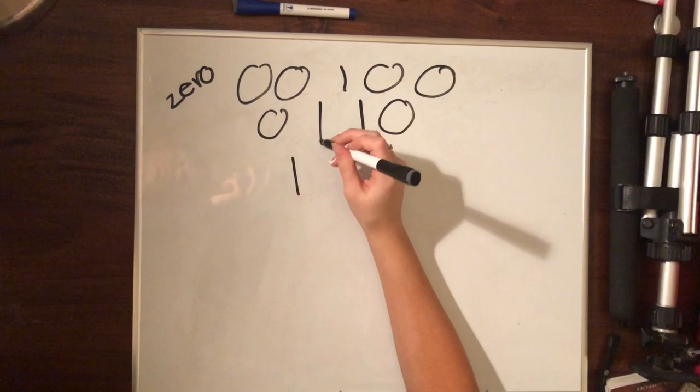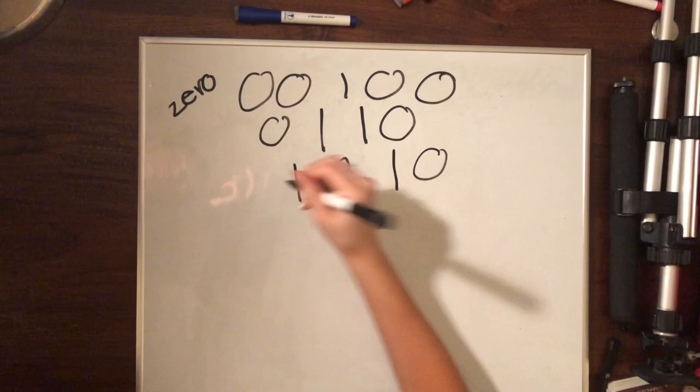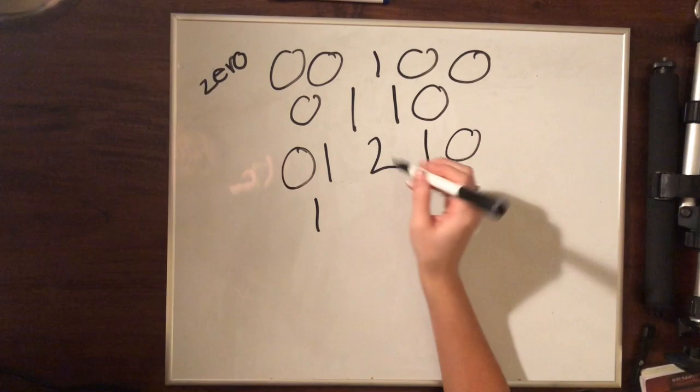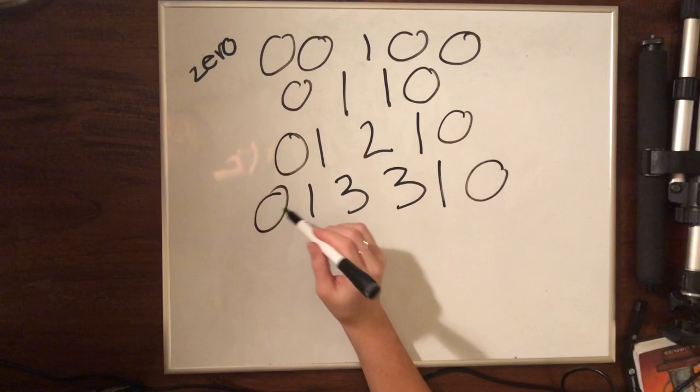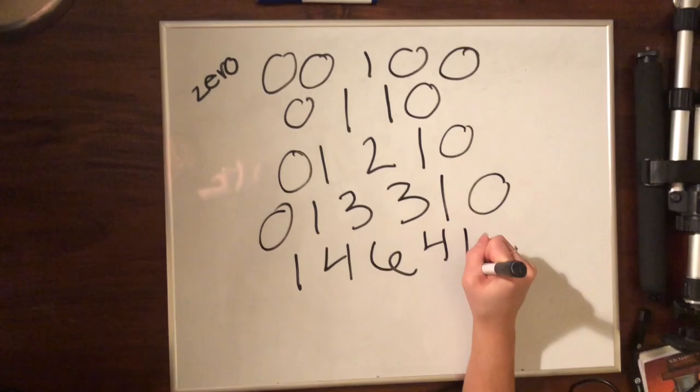We have imaginary zeros on the side, so we go down again. Zero plus one is one, one plus two is three, two plus one is three, and one plus zero is one. Imaginary zeros again, and then zero plus one is one, one plus three is four, three plus three is six, and three plus one is four, and one plus zero is one.